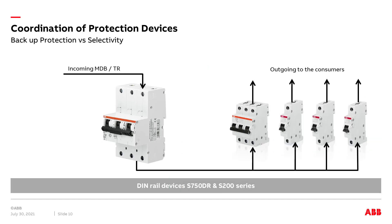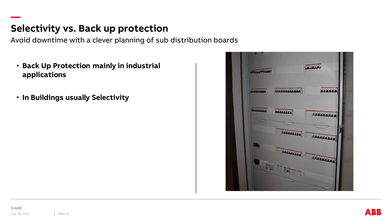The main application of the S750 is the protection of the incoming feeder of houses; however, it can also be used in locations where safe and reliable power supply is paramount — for example, the protection of a hotel section with several rooms. As mentioned earlier, backup protection is mainly used in industrial applications where you can accept high short circuit ratings. In buildings, however, it is common to coordinate protection devices for selectivity.